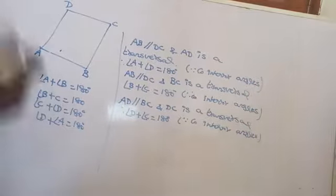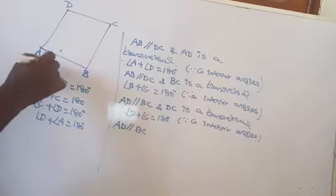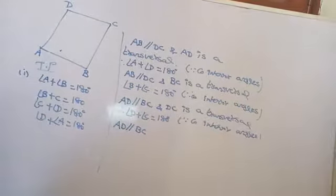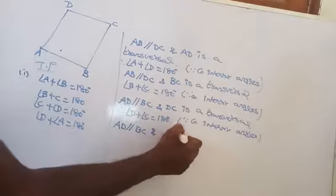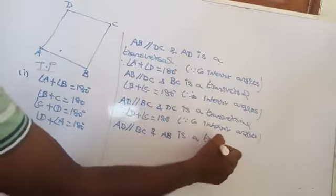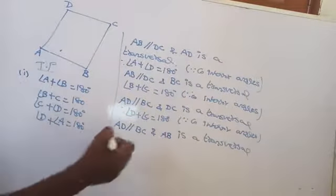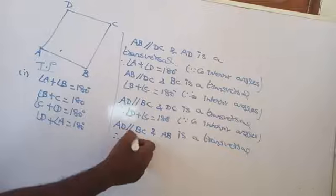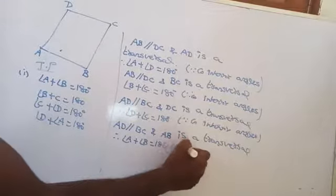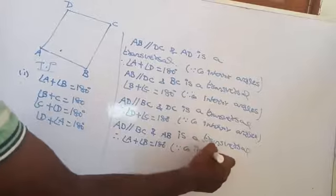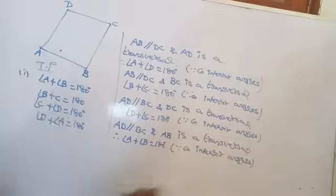AD is parallel to BC and DC is a transversal. Therefore angle D plus angle C equal to 180 degrees — since co-interior angles. AD is parallel to BC and AB is a transversal. Therefore angle A plus angle B is equal to 180 degrees — since co-interior angles.